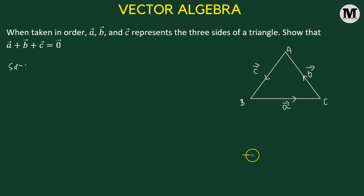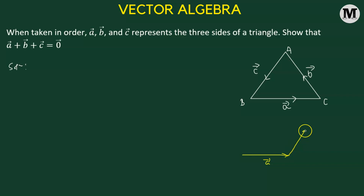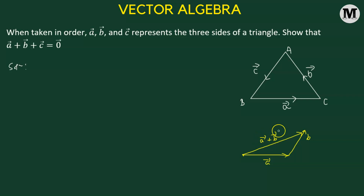The triangle law of vector addition states that if we have vector a, wherever the terminal point of vector a lies, we coincide it with the initial point of vector b. Then we join the initial point of vector a and the terminal point of vector b with a new vector, and that gives us the sum of the two vectors.